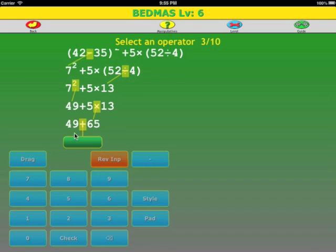One operator left. 49 plus 65, 5 plus 9 is 14. 4 plus 6 is 10. Carry the 1. 1, 1, 4. 114.